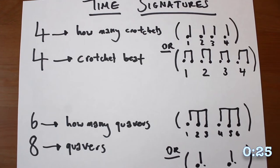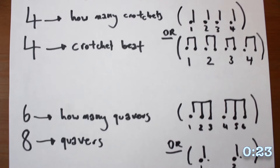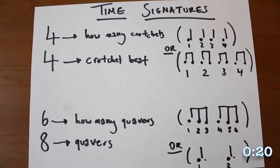Time signatures are two numbers on top of each other at the beginning of the music. If the bottom one's a four, you're counting crotchets. If it's an eight, you're in quavers.